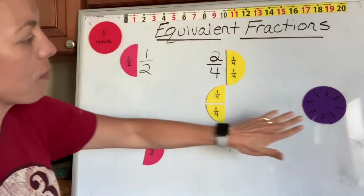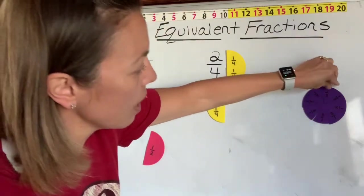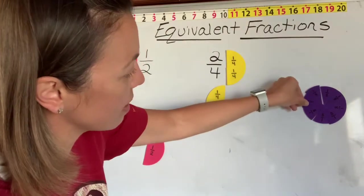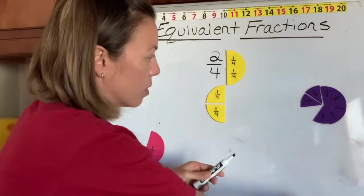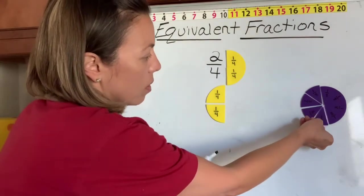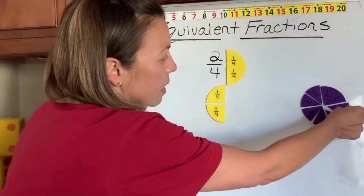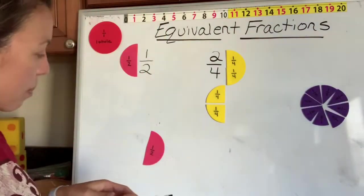So let's say we have a circle and this one is cut into eight pieces. One, two, three, four, five, six, seven, eight. Eight equal pieces.